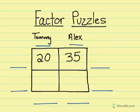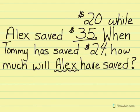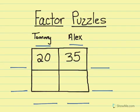We also know that Tommy has now saved $24. So underneath Tommy's column, I'm going to write $24. The question is, how much will Alex have when Tommy has saved $24?